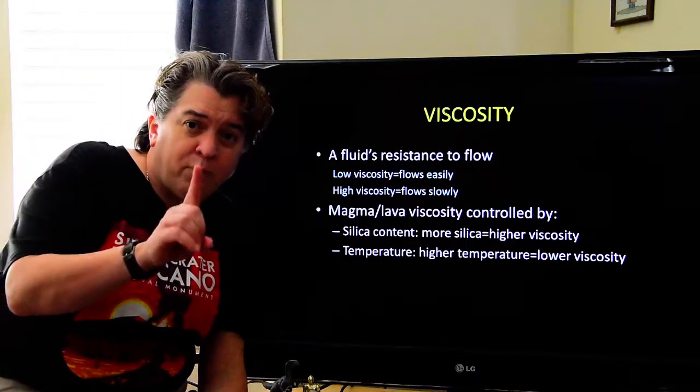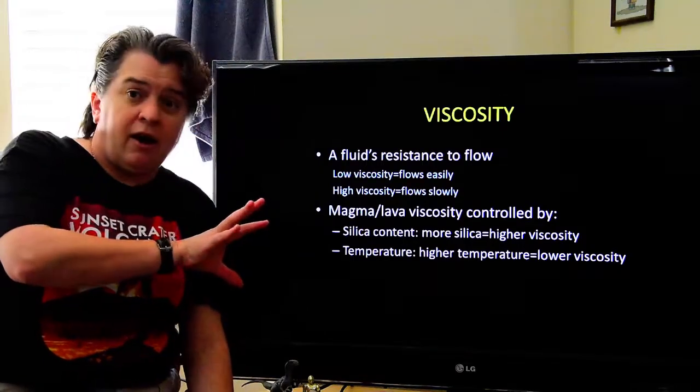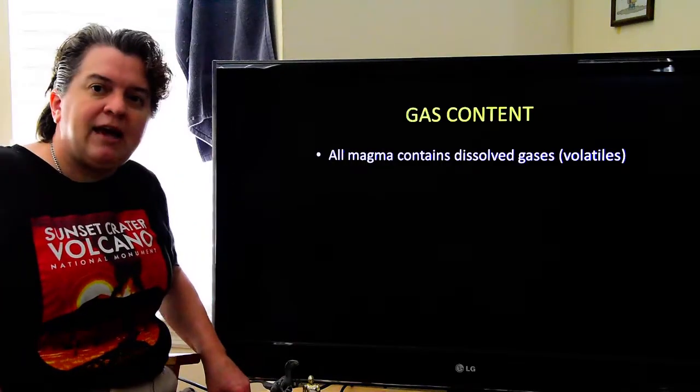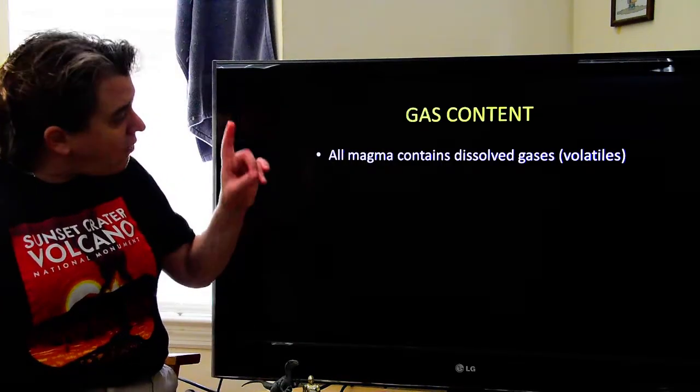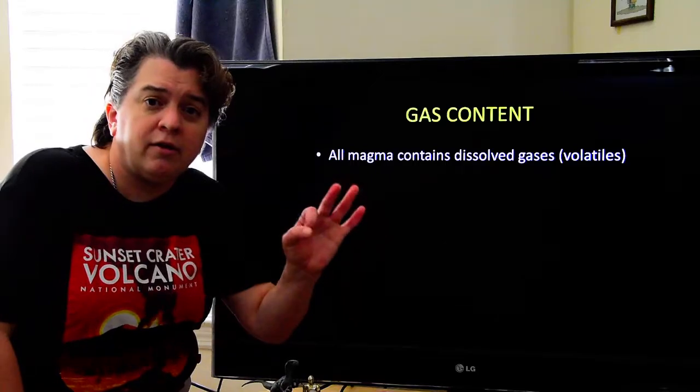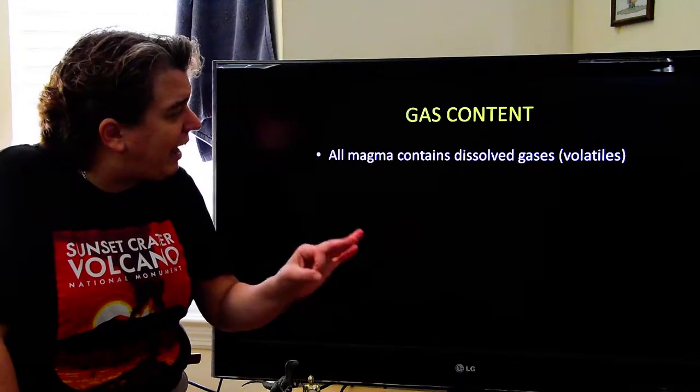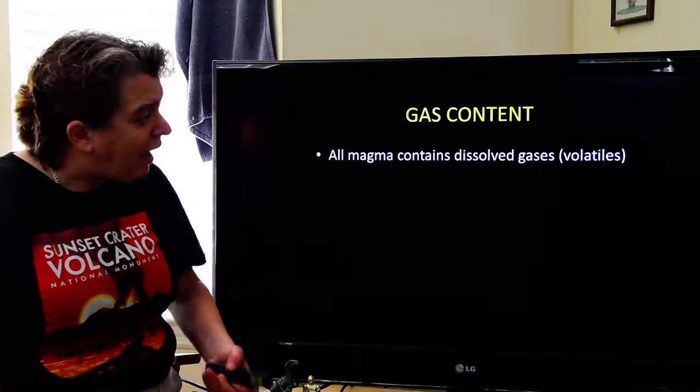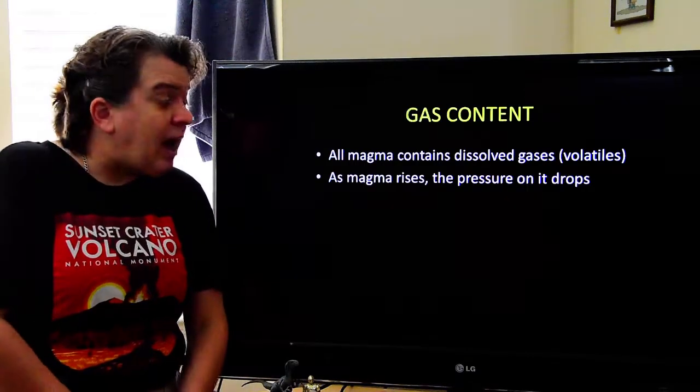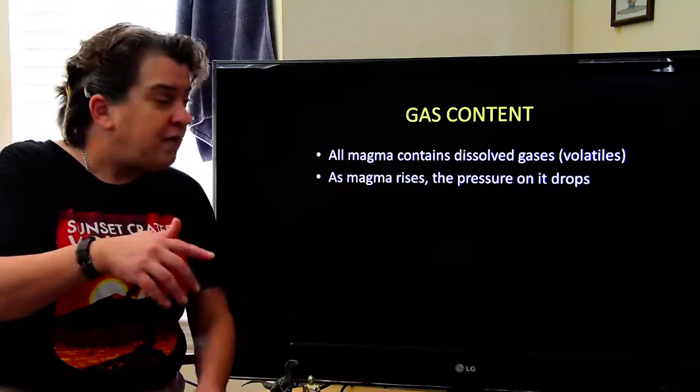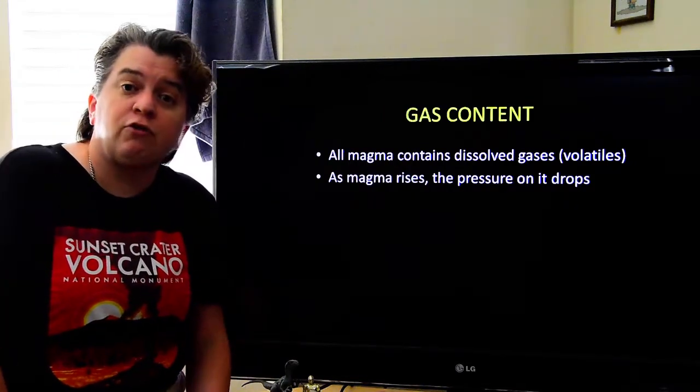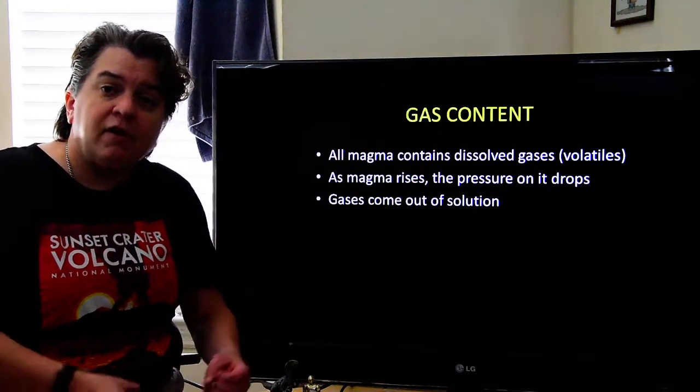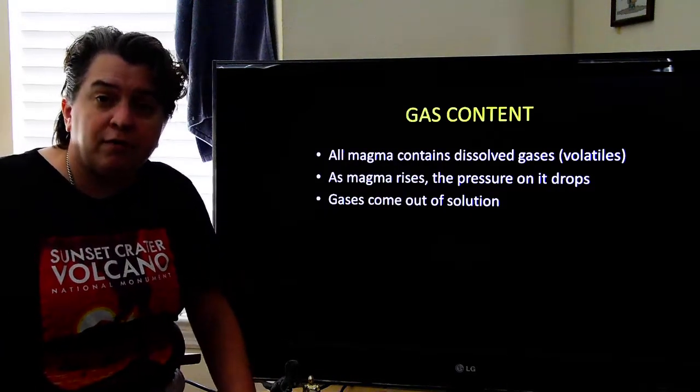So let's put this together then and see how viscosity affects the way a volcano erupts. There's one more important part to the character of a volcano, and that is the gas content. All magma contains dissolved gases. That's those volatiles we were talking about in the past. And as the magma rises, the pressure on it drops. And when the pressure drops, the gases come out of solution.